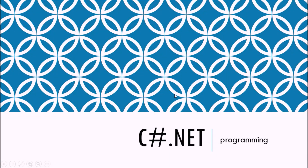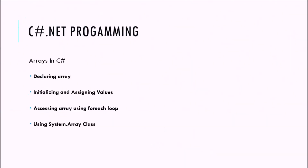Hello friends, welcome to the 8th video of C-sharp .NET programming. In this video we are going to cover arrays in C-sharp. We are going to discuss how to declare arrays, how to initialize and assign values to elements, how to access array elements using the for-each loop, and we will also use the System.Array class, a built-in class that provides different methods to manipulate arrays.